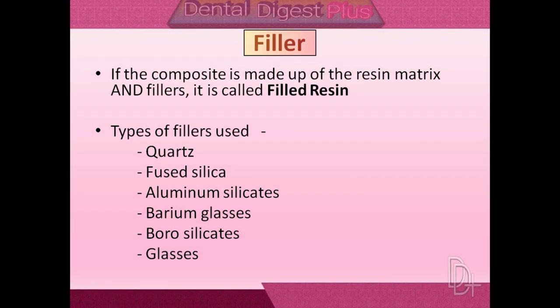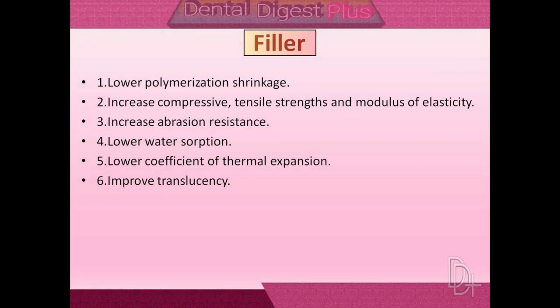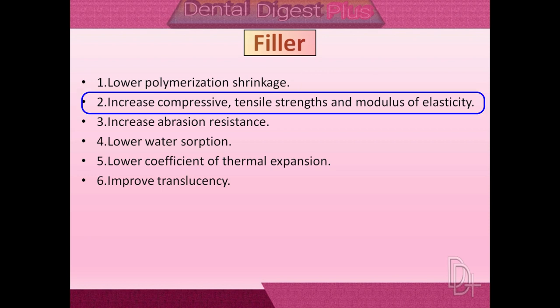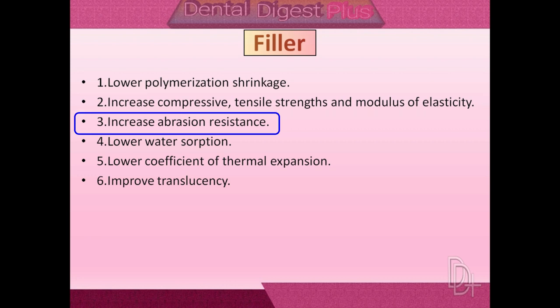The filler particles form the dispersed phase of the composite material. The primary purposes of filler particles are to strengthen a composite and to reduce the amount of matrix material. Several important properties are improved by increased filler loading: as filler content increases, resin content decreases, therefore polymerization shrinkage decreases. Filler increases the strength and modulus of elasticity, so there are less chances of fracture of the restoration. Filler increases abrasion resistance, thereby reducing wear of the restoration.